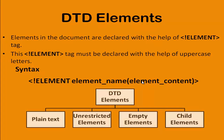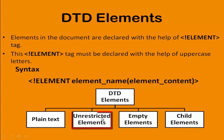DTD elements can be further divided into four different categories: the first one is plain text, second one is unrestricted elements, third one is empty elements, and the fourth one is child elements. To start with, what is plain text in DTD elements?